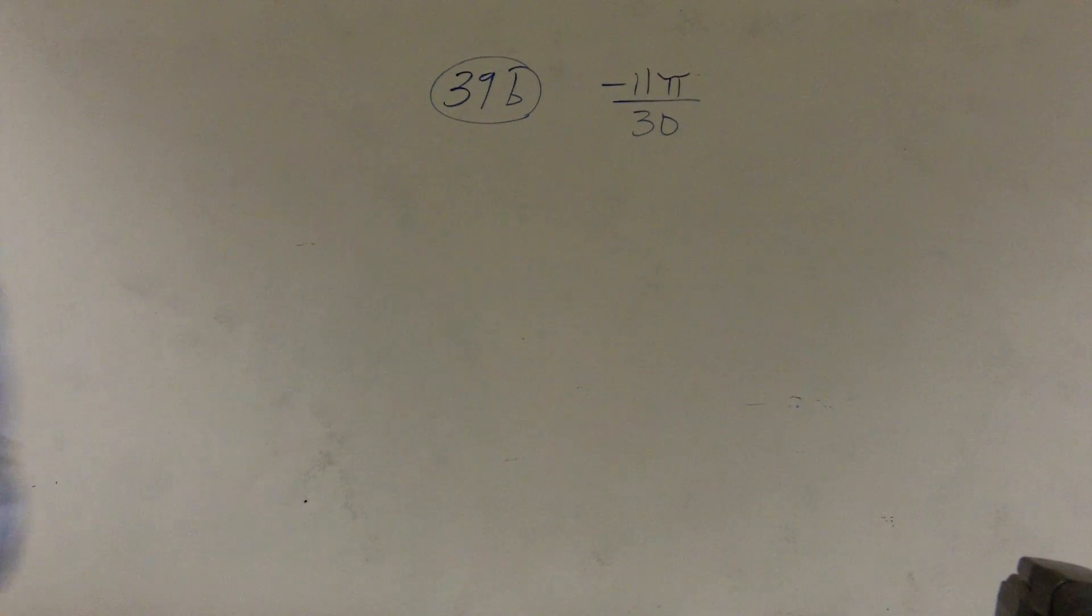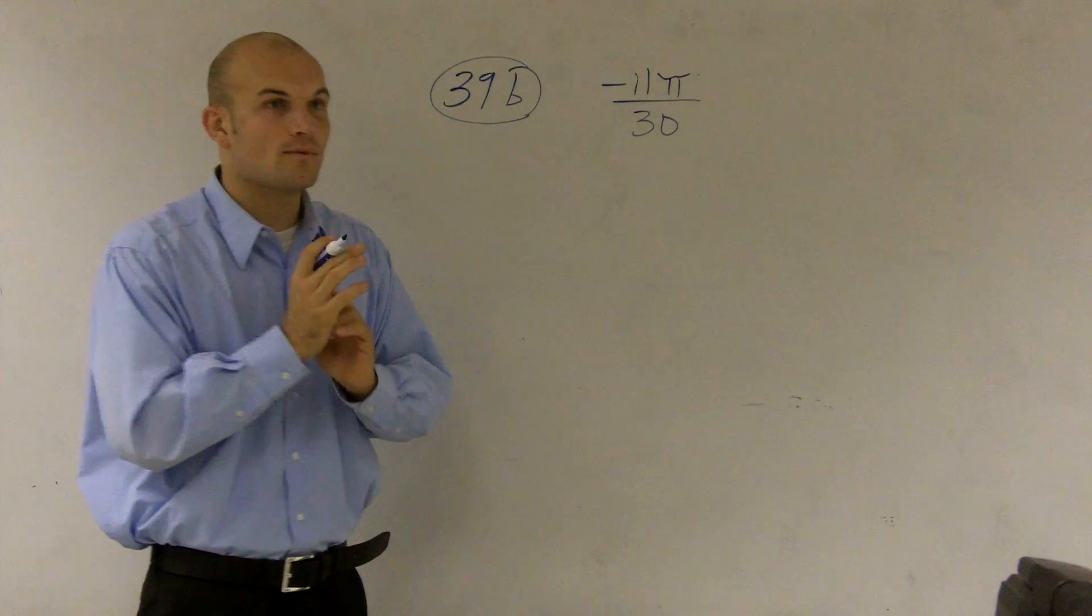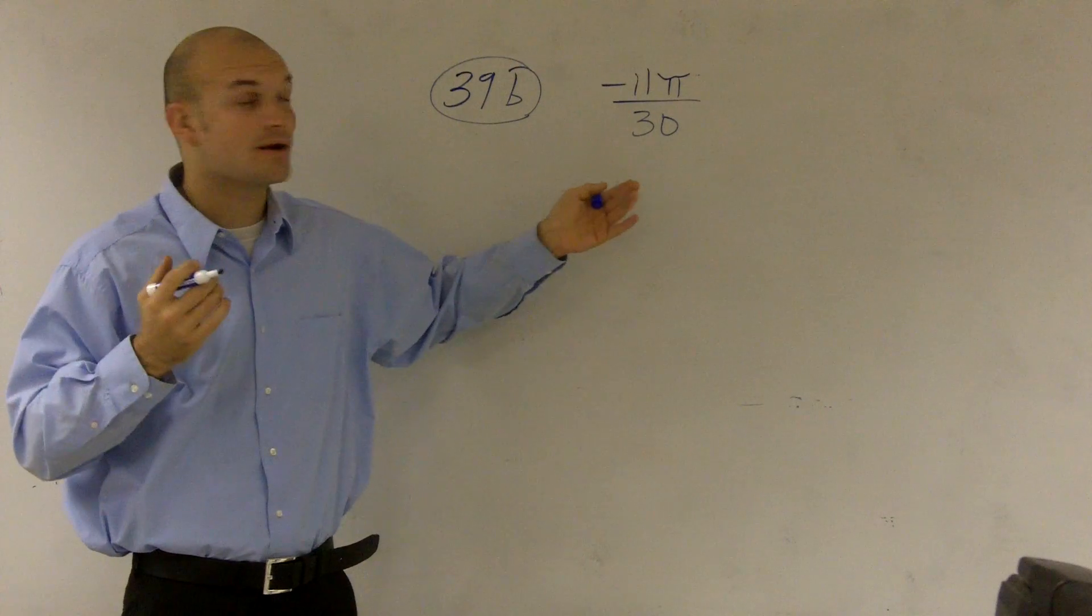So for this problem, if you look at it, it says 11 pi over 30. What we need to do is convert our radians to degrees.